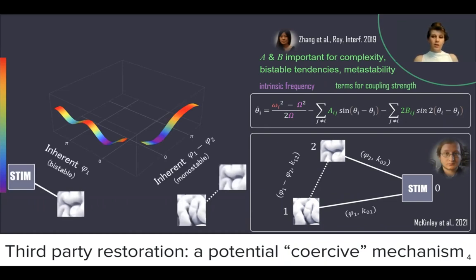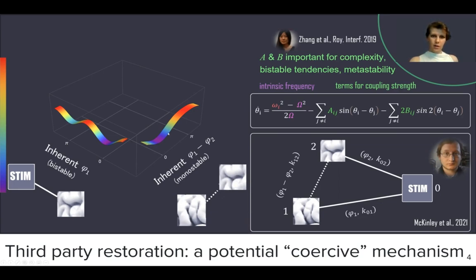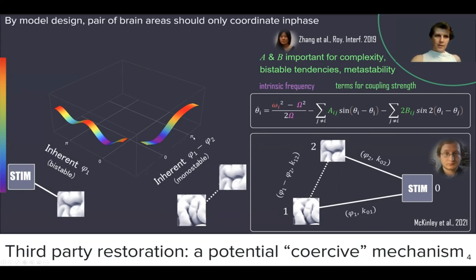In his work, Joseph conceptualized two brain regions, which were set in a parameter range where they are inherently monostable. As you can see in the potential shown here, there is a valley at in-phase — zero gradient of their relative phase — but there is no attractor in anti-phase. So by model design, those brain areas are incompetent for anti-phase and should only coordinate in-phase.